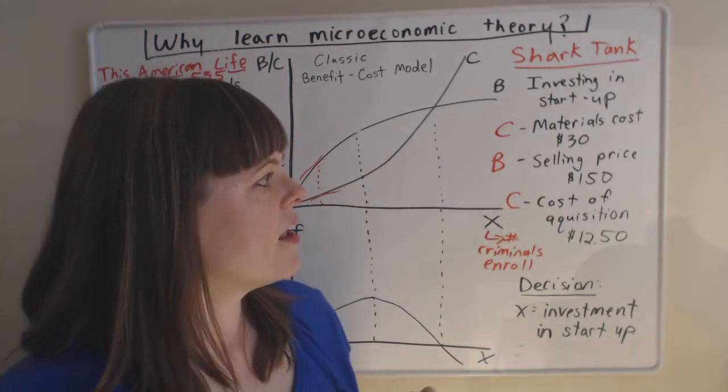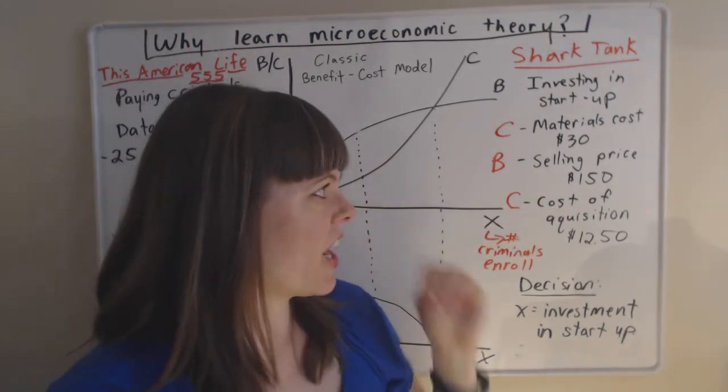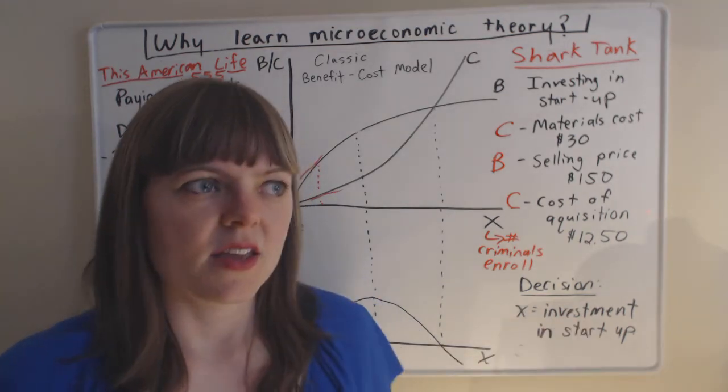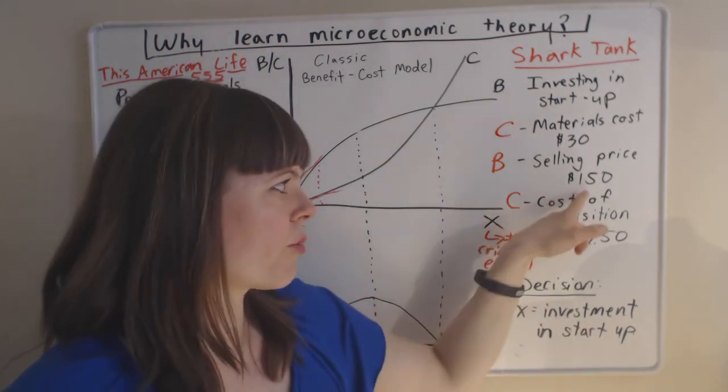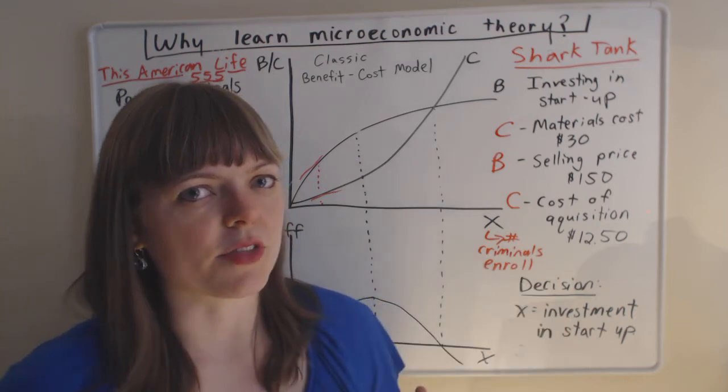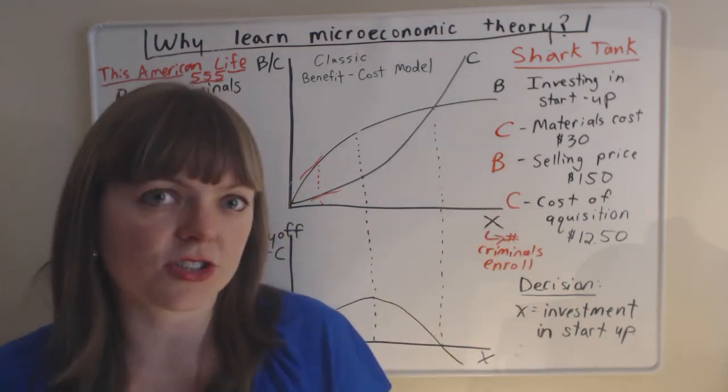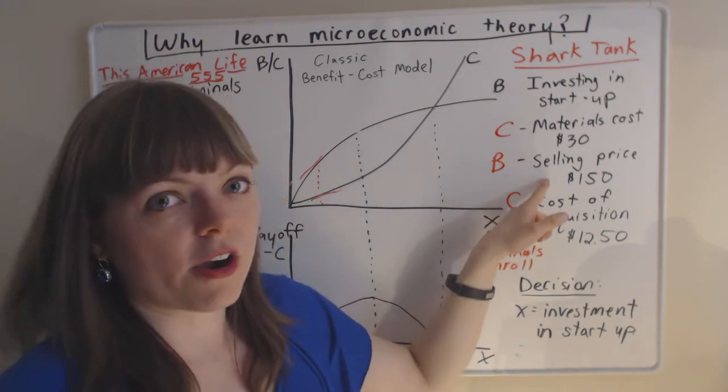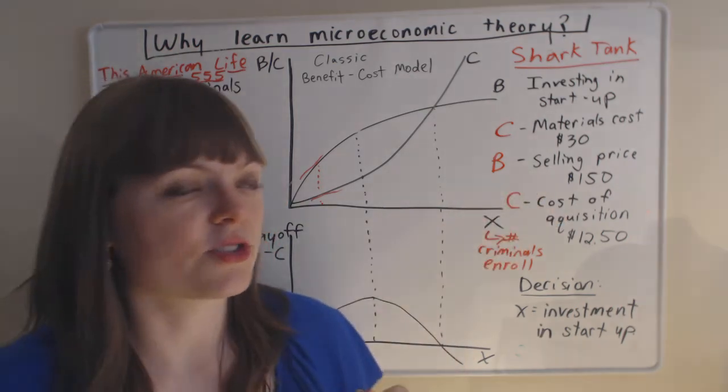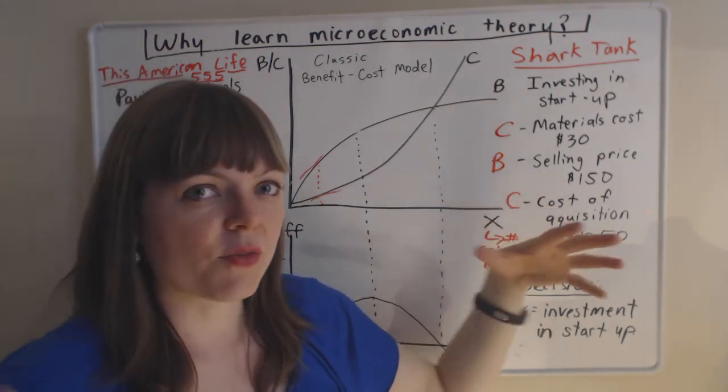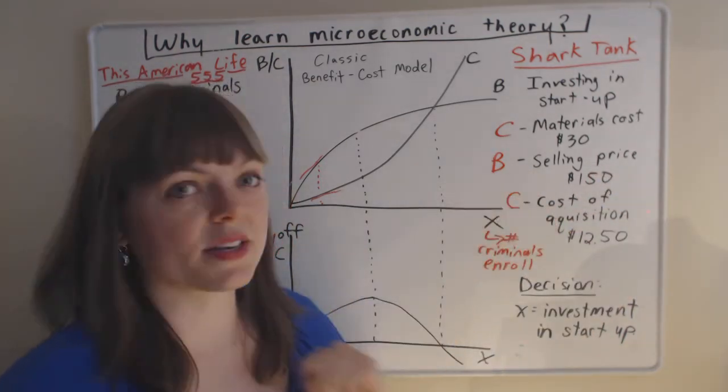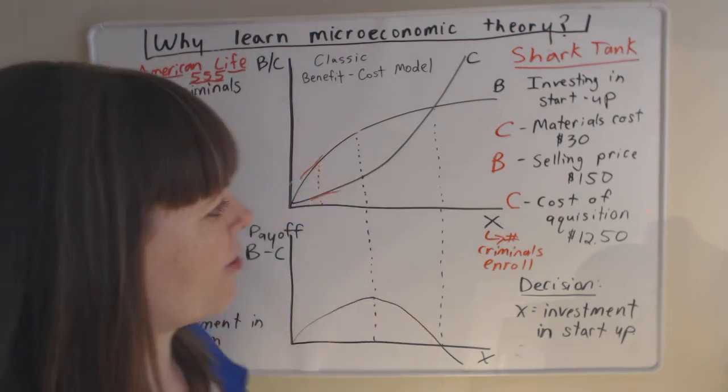The selling price, that one might change as we get more and more customers. We might sort of get all the customers who are willing to pay $150 and we might need to lower the price. So this one could be a potential driver for making our decision on how much to invest. How quickly have we used up all the $150 people and how quickly do we need to lower that price? That's one key factor if we're thinking about economic theory.